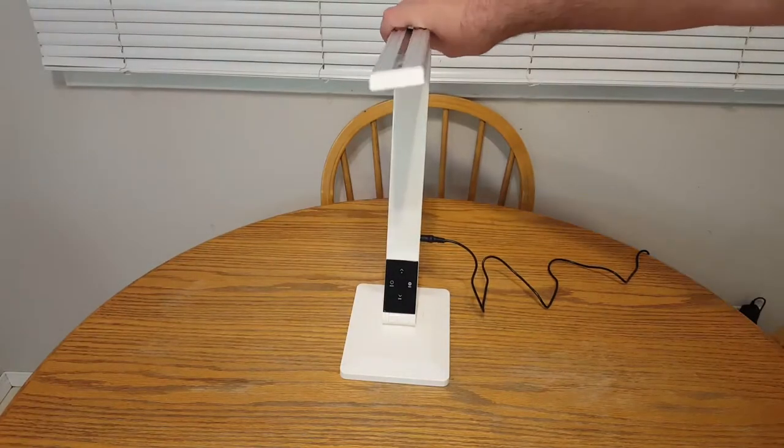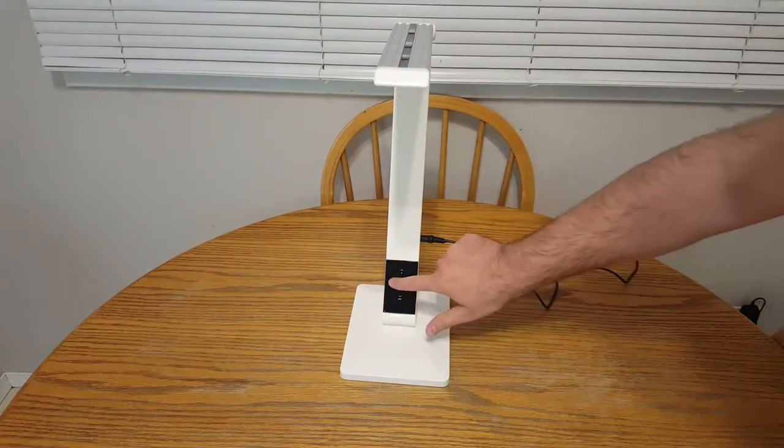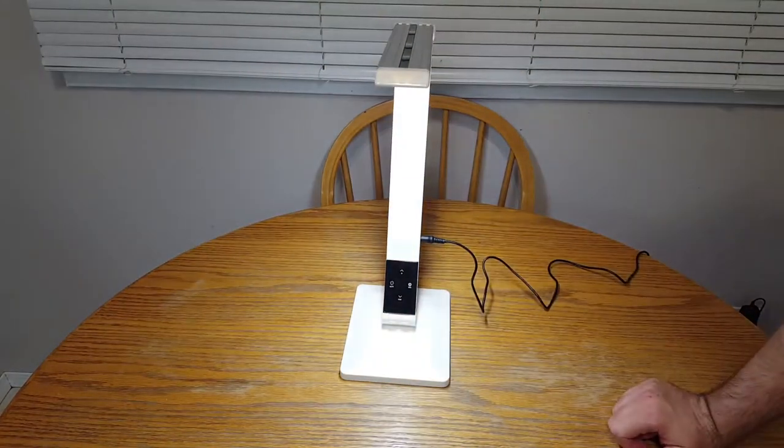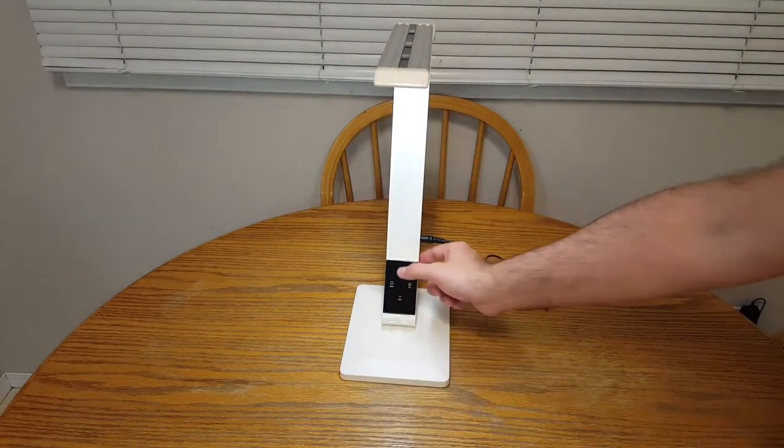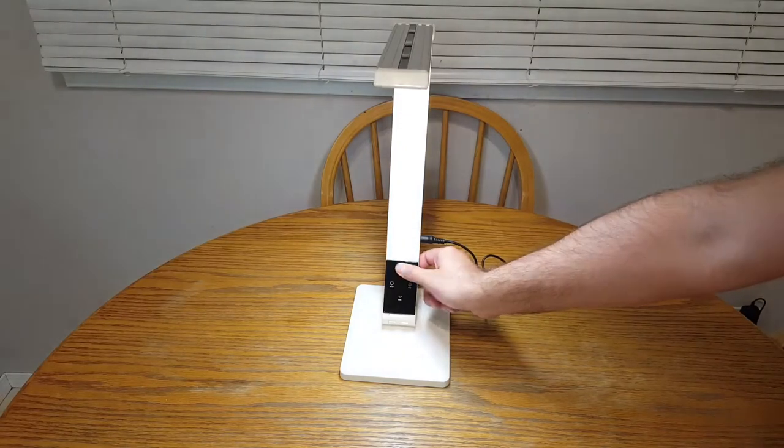So the touchpad control system has the power button on the left there, increase brightness on the top, decrease brightness on the bottom, and then on the right-hand side is your mode control.